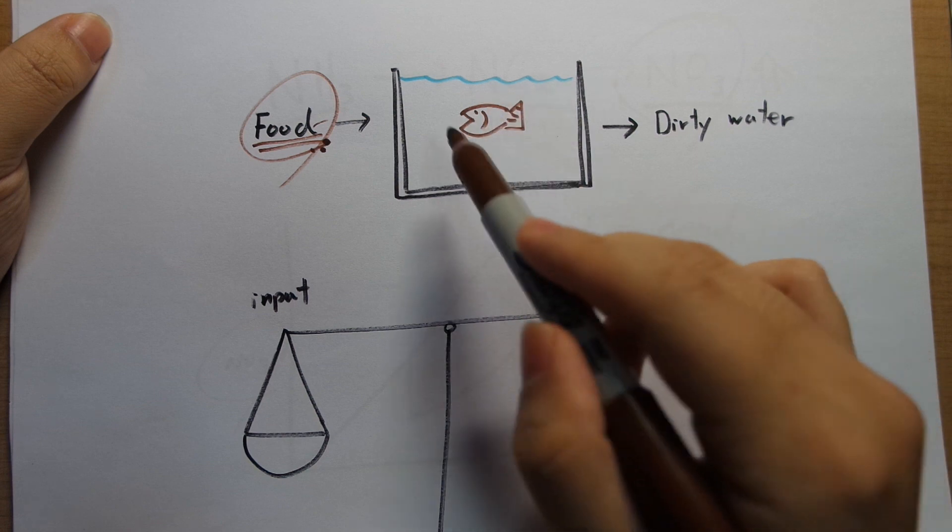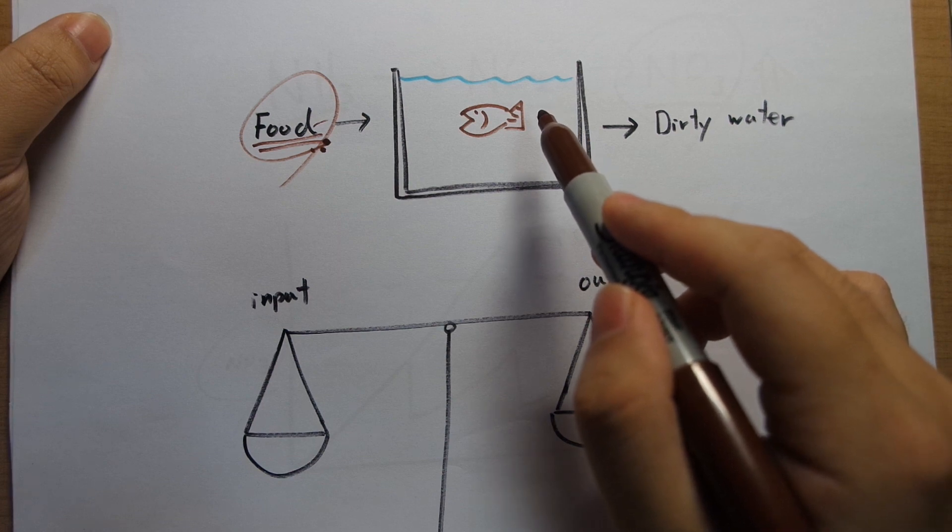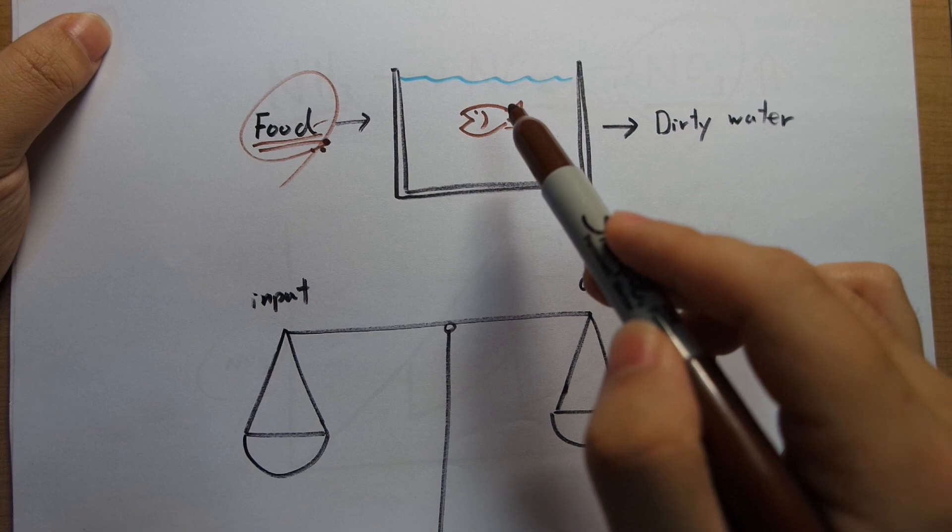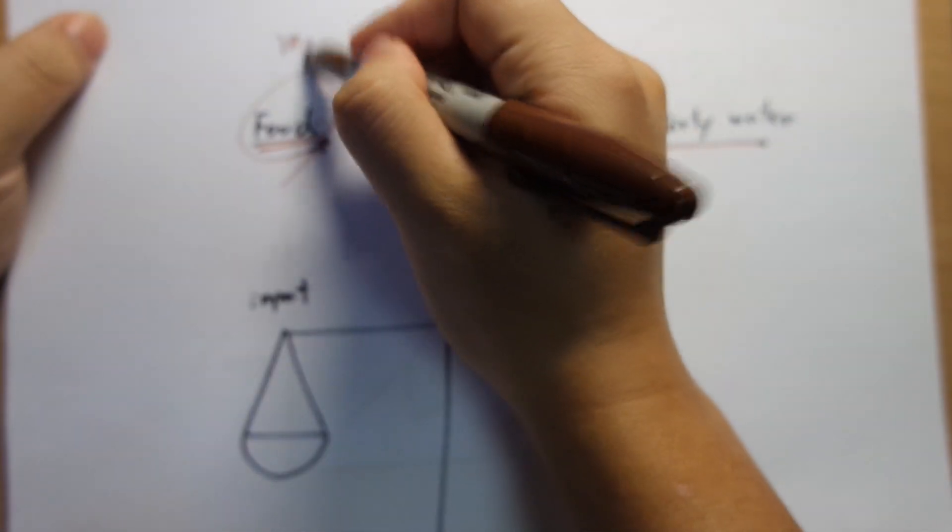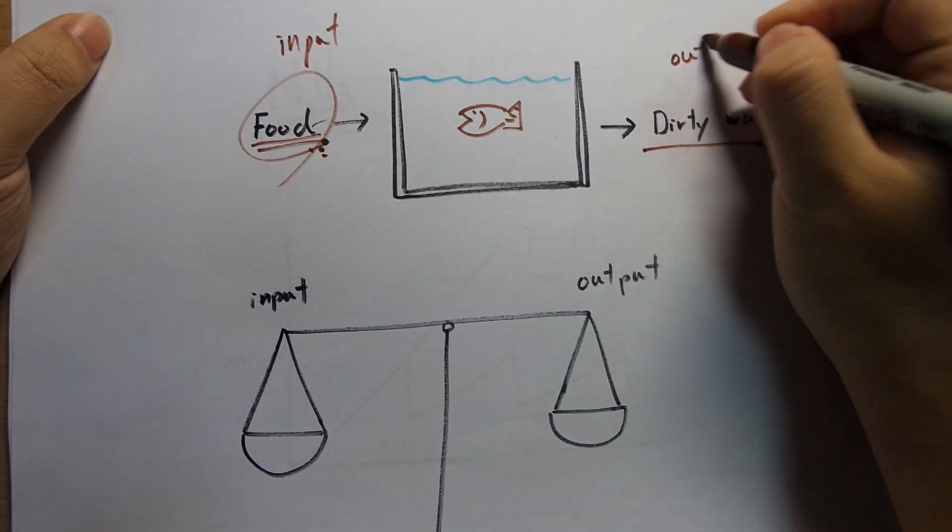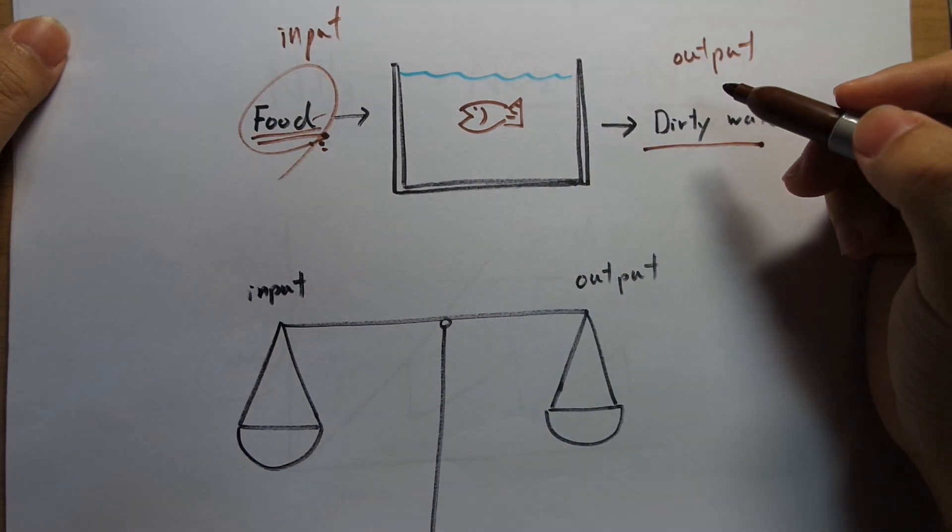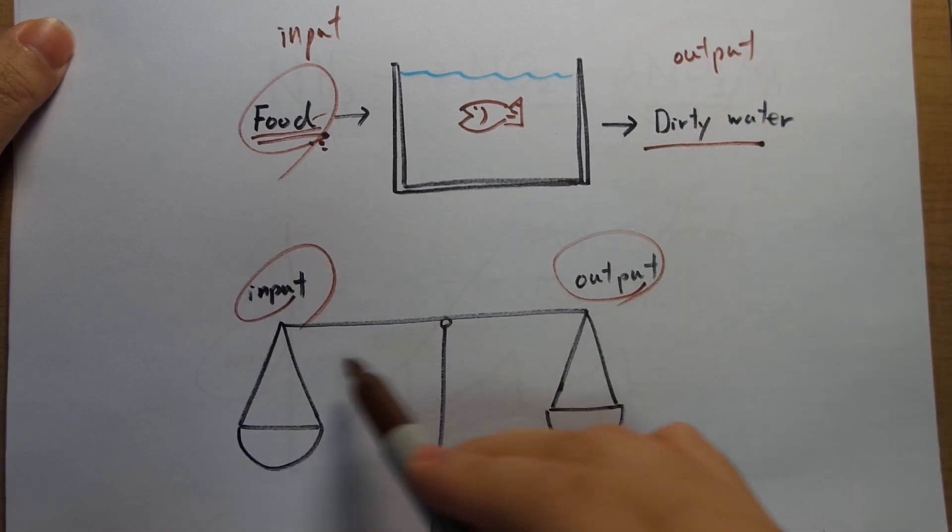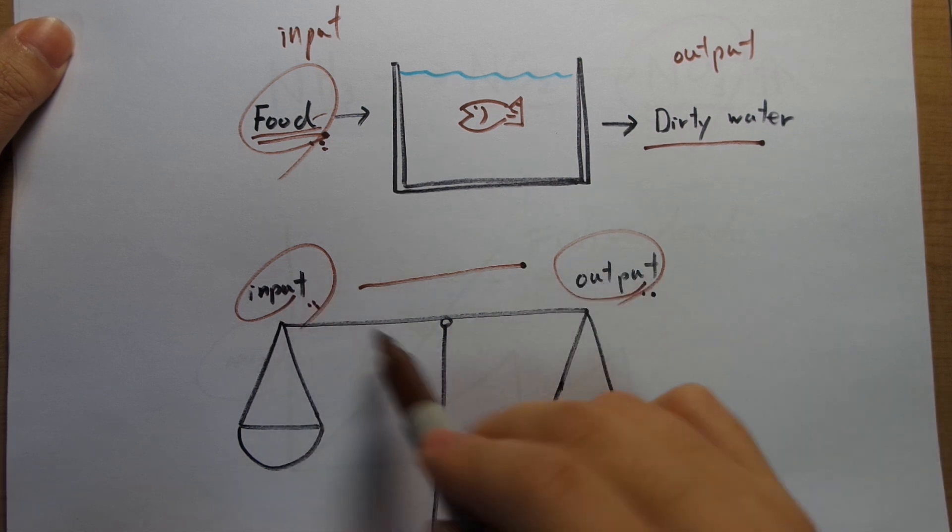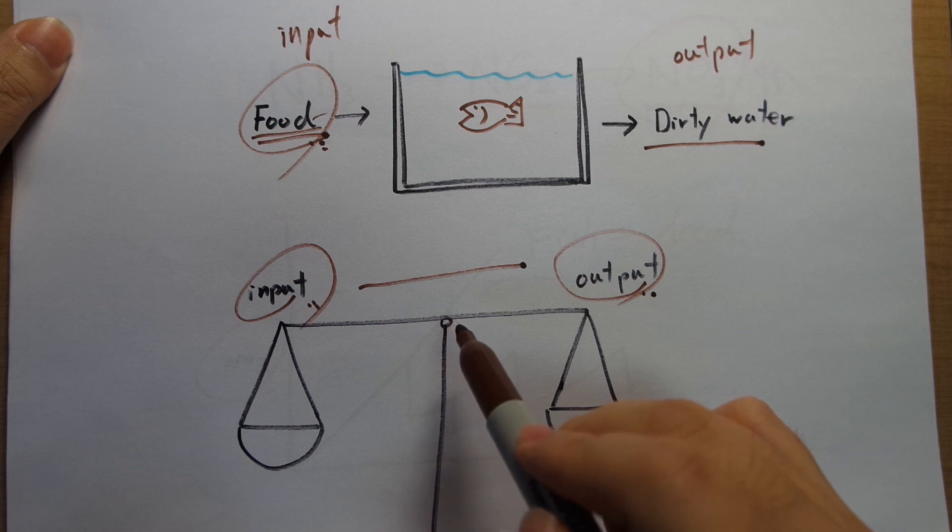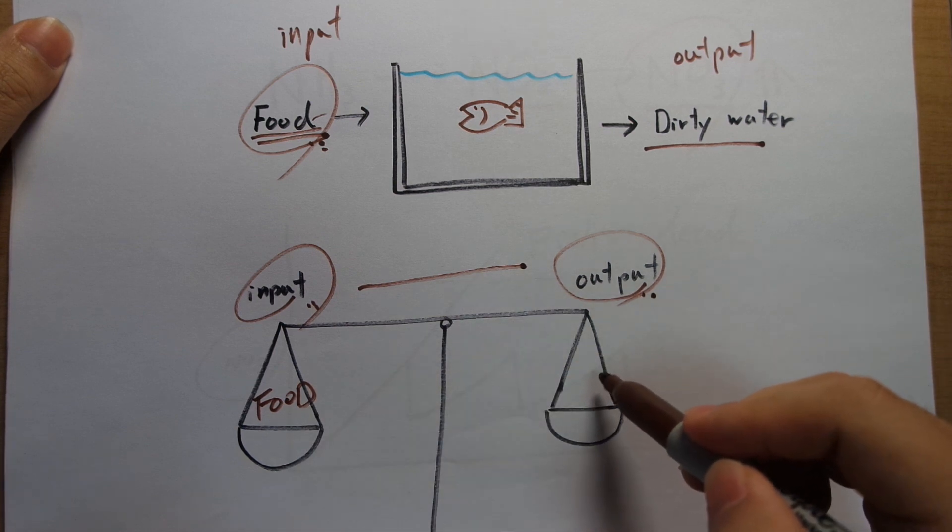Otherwise, something is going to accumulate in there and get up to toxic levels and kill your fish. So a conventional way of doing this is you're adding the food and the thing coming out is the dirty water. So your input is the food and your output is your dirty water. This balances out and keeps your tank balanced and prevents your fish from dying. Your input and output must be balanced. If you have too much input and not enough output, something is accumulating in the tank and eventually that's going to reach levels that are toxic to your fish. So again, your input is food and your output in conventional means is dirty water.